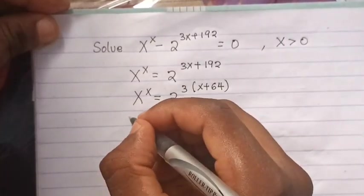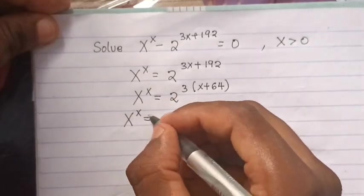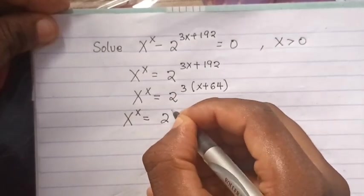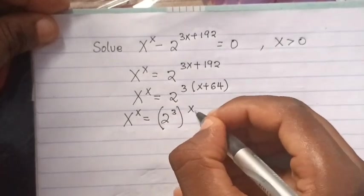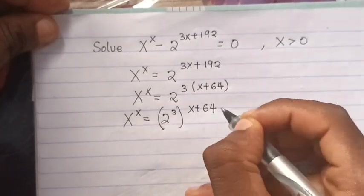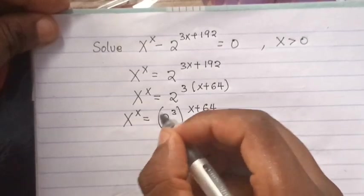From here, this one is same as x to the x equals to 2 to the 3, bracket, and then here is x plus 64.